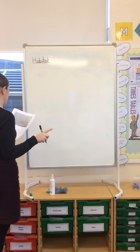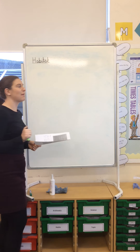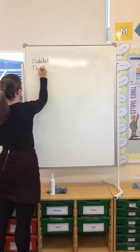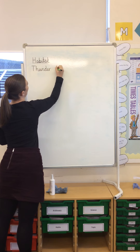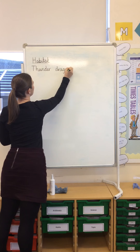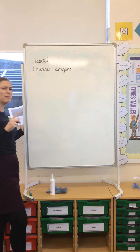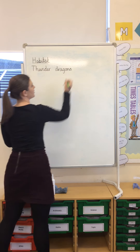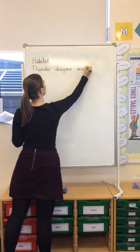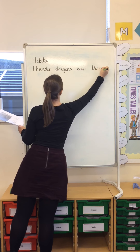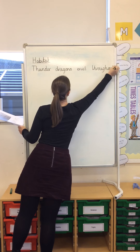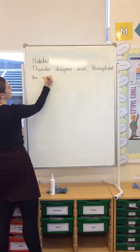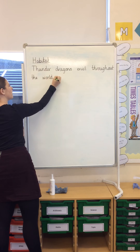Underline it — hopefully you can use a ruler. So, I'm still writing about Thunder Dragons, so I'm going to introduce what I'm writing about again with a capital letter. I'm going to have 'Thunder Dragons.' On my planning sheet I said that they exist throughout the world, so obviously I want to include that. So: Thunder Dragons exist throughout the world. Full stop.